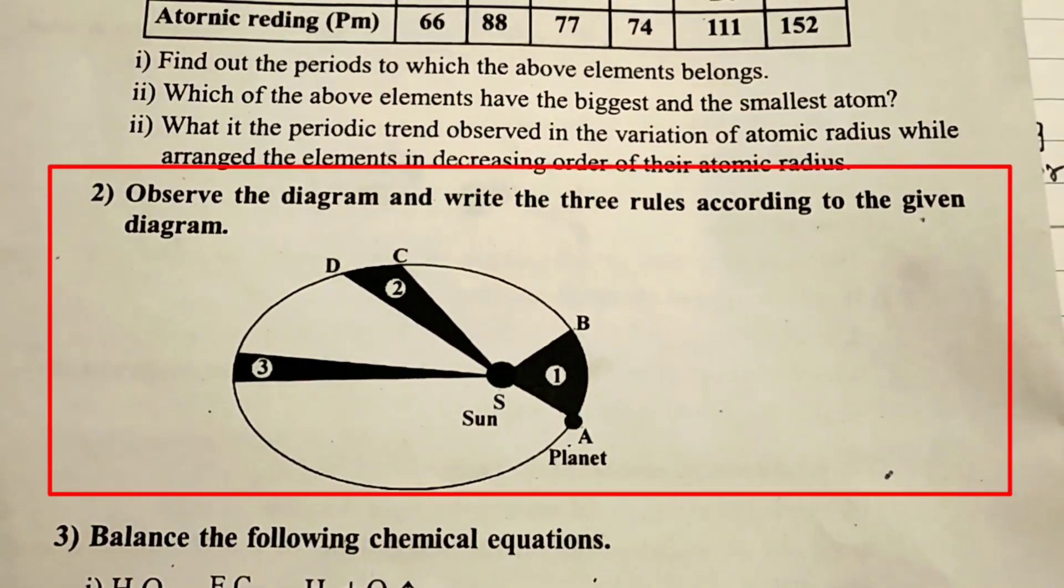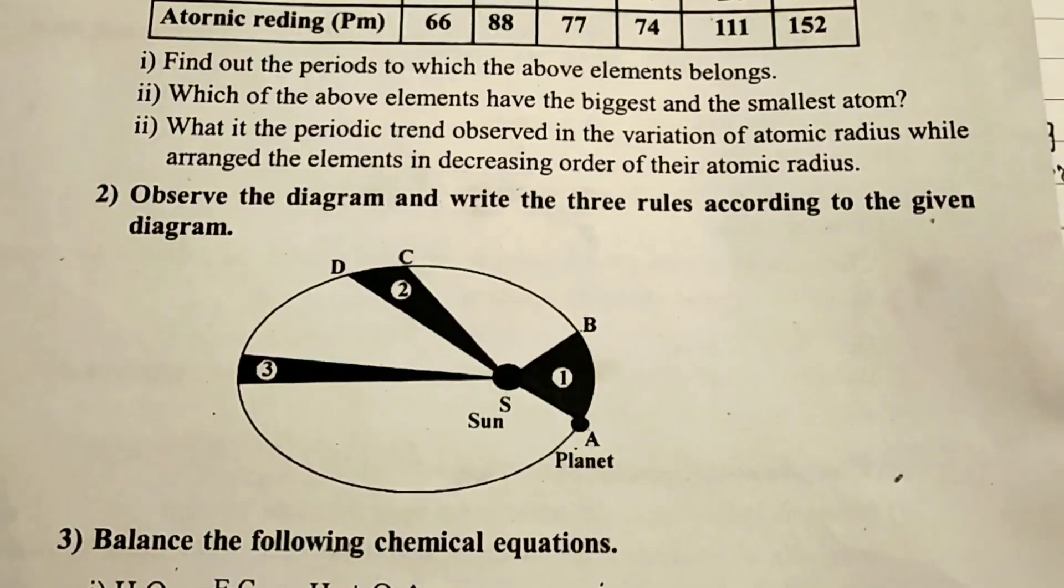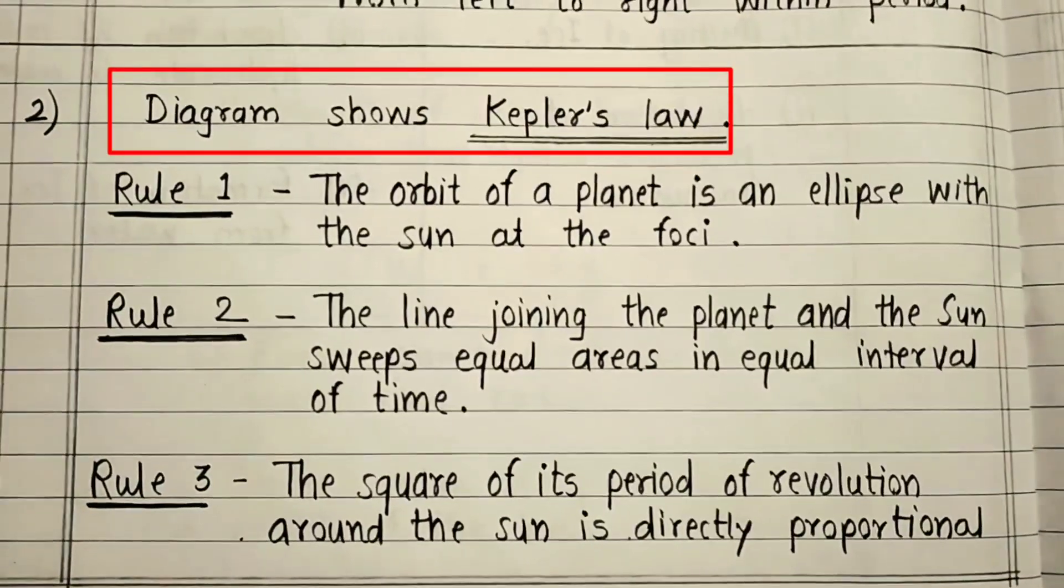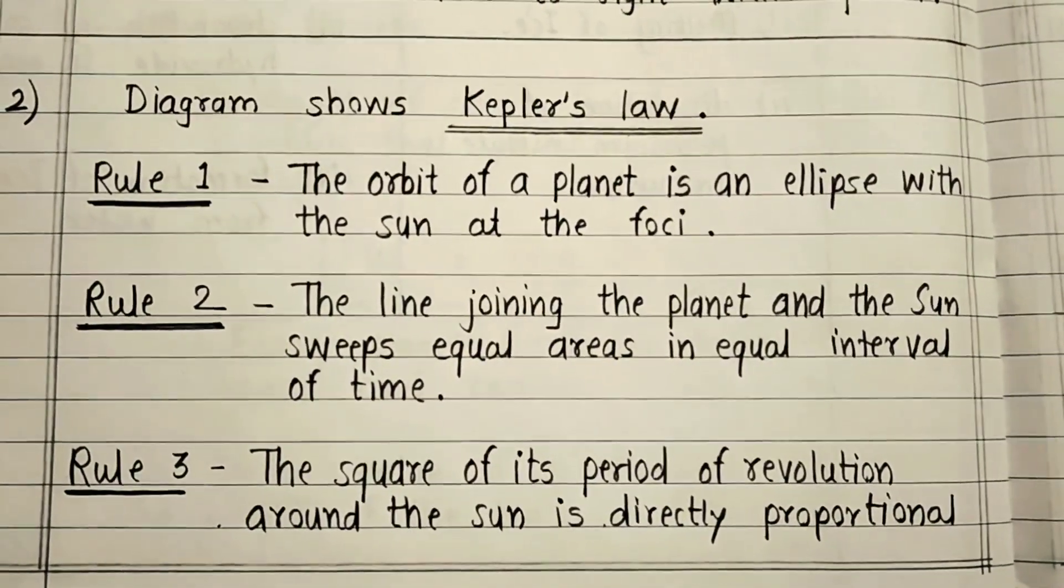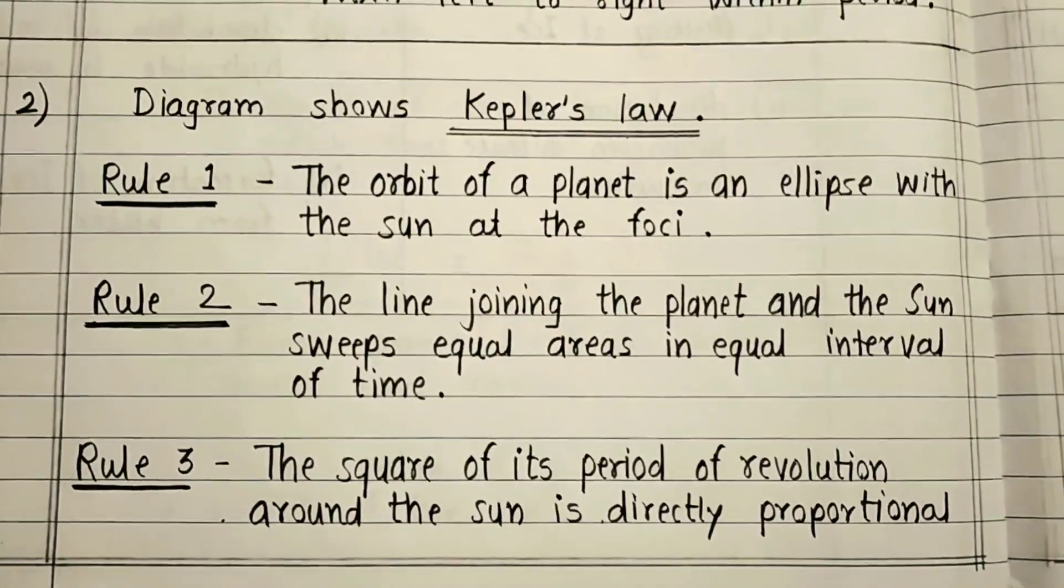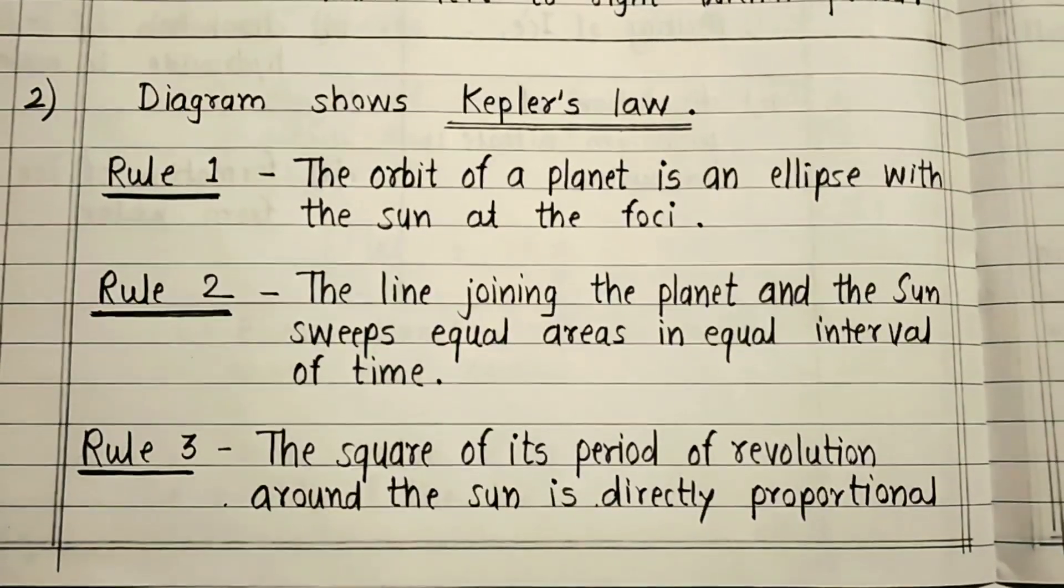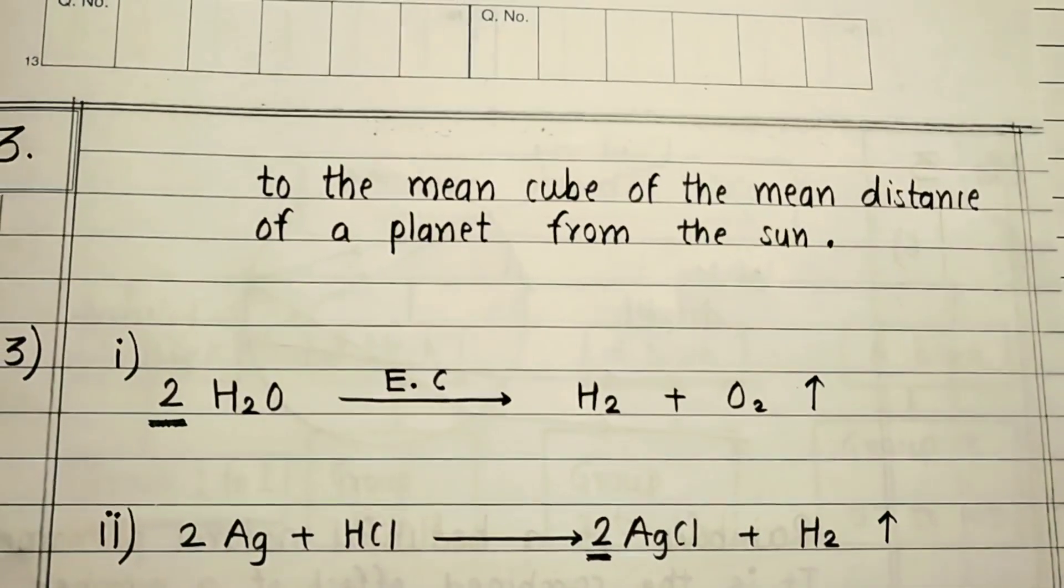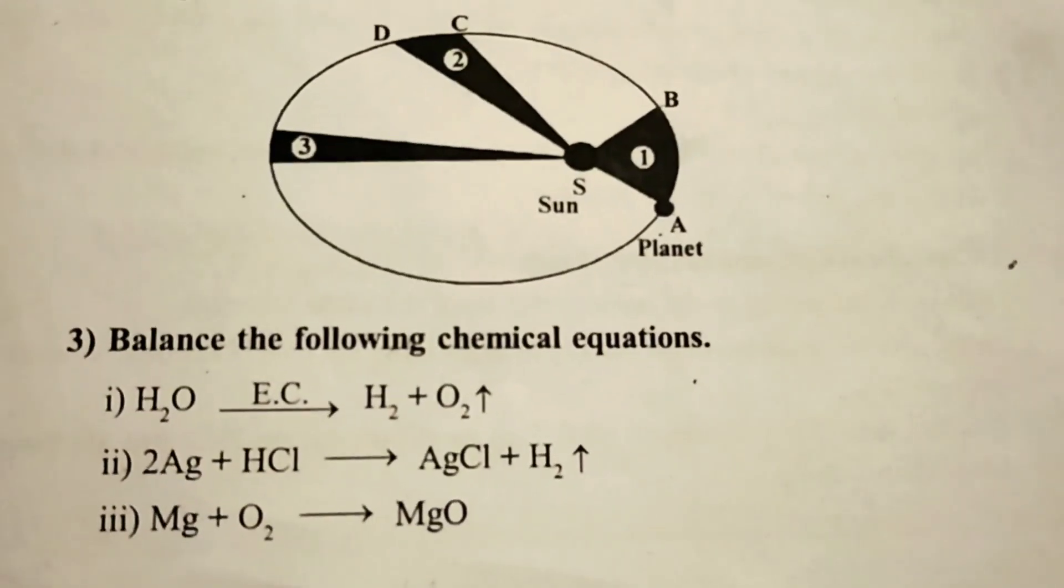Second question: Observe the diagram and write the three rules according to the given diagram. Diagram shows Kepler's law. Rule 1: The orbit of a planet is an ellipse with the Sun at the foci. Rule 2: The line joining the planet and the Sun sweeps equal areas in equal interval of time. Rule 3: The square of its period of revolutions around the Sun is directly proportional to the cube of the mean distance of planet from the Sun.